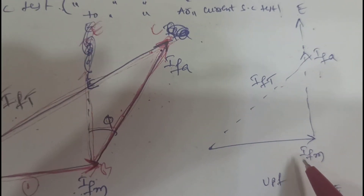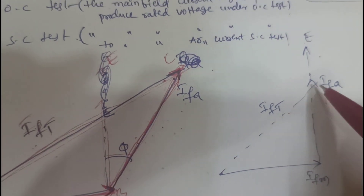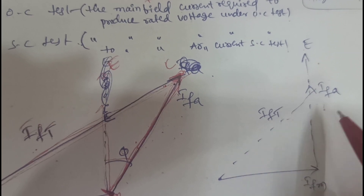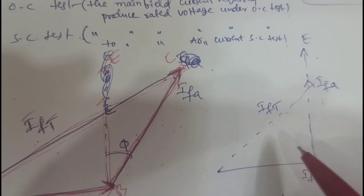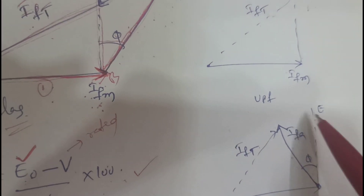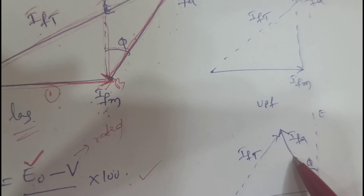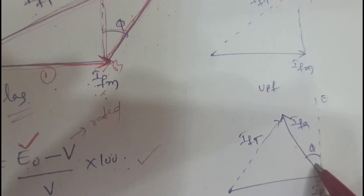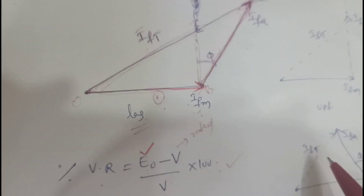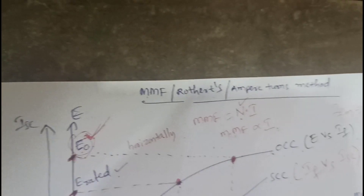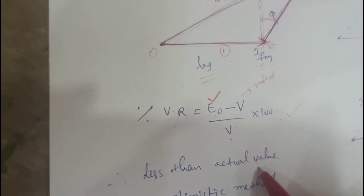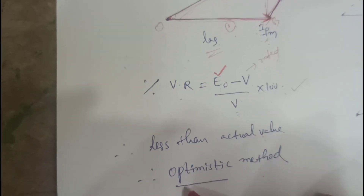For unity power factor, IFA is in phase with E, and the vector resultant of IFM and IFA gives IFT. For leading power factor, E leads IFA by angle phi, and the vector resultant of IFM and IFA gives IFT. Finally, the MMF method is an optimistic method because the result obtained is less than the actual value.